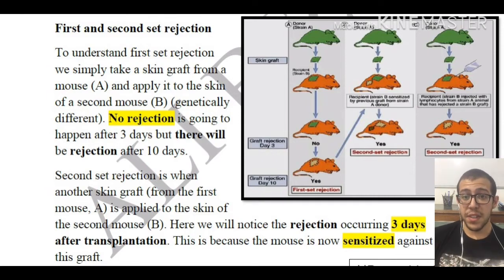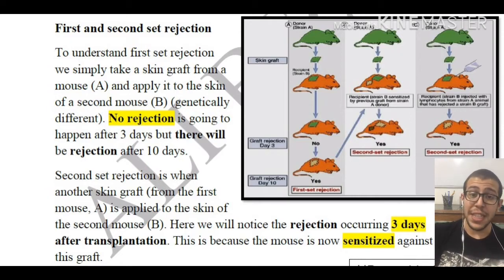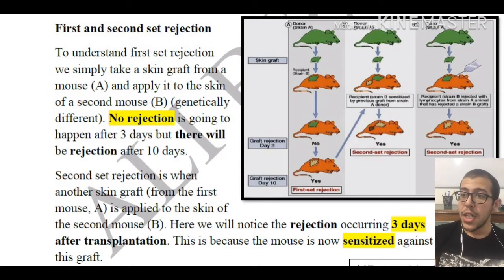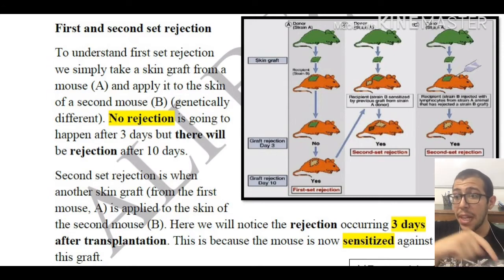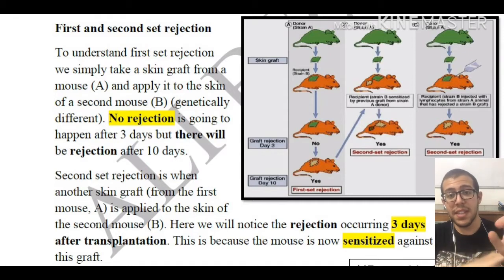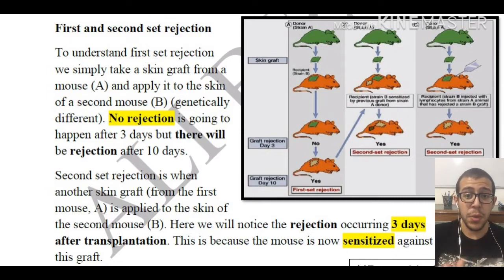No rejection is going to take place in the first three days — we'll be discussing why. There will be rejection, however, after 10 days, and this is what we are going to be seeing in the picture to the right. The second set rejection is when another skin graft from mouse A is applied to the skin of mouse B. We take skin cells from mouse A, put them on mouse B, and after 10 days we get that first set rejection.